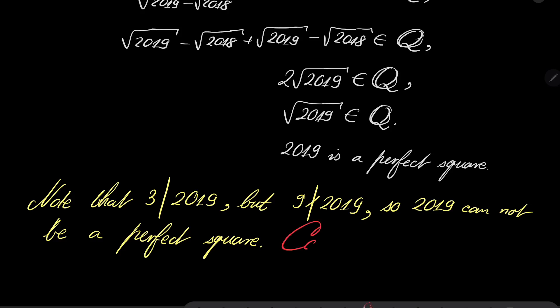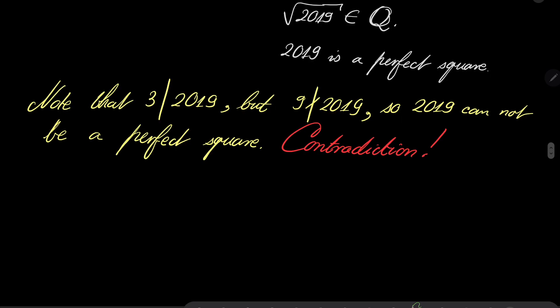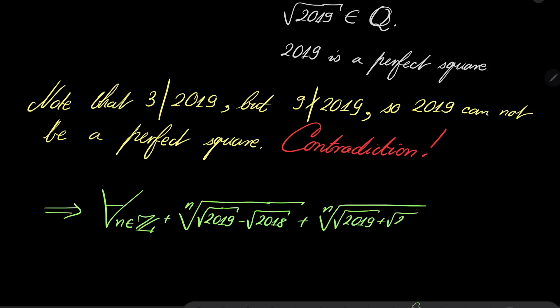So 2019 cannot be a perfect square. So we have a contradiction. We have reached our contradiction, which means, of course, that for every positive integer n, this whole expression with roots is irrational. Which concludes our proof, because it's exactly what we wanted to demonstrate. And that closes our problem.